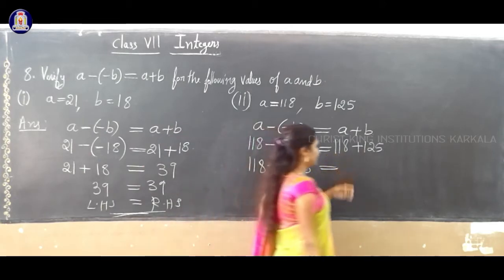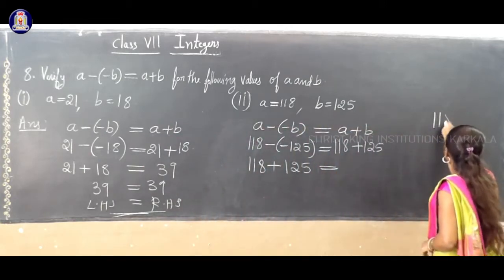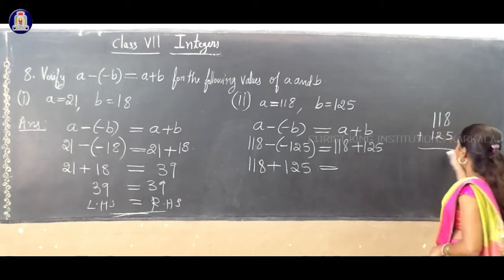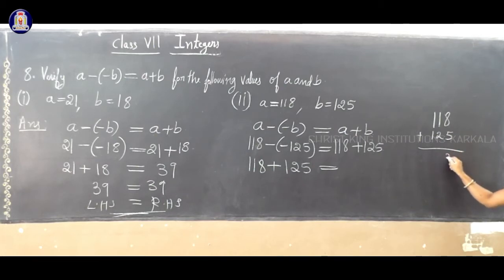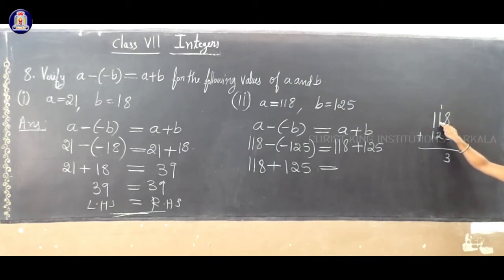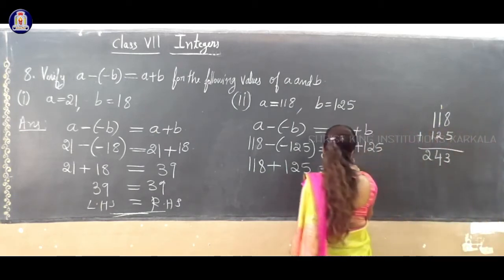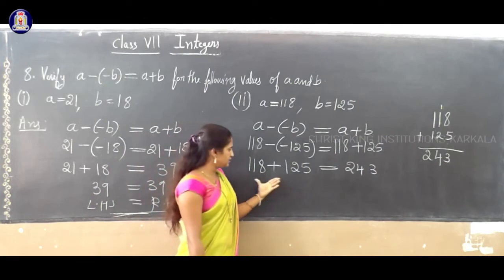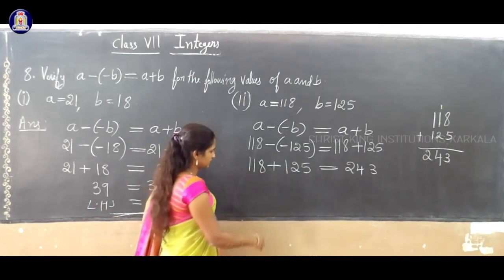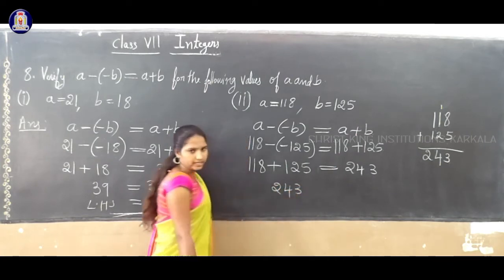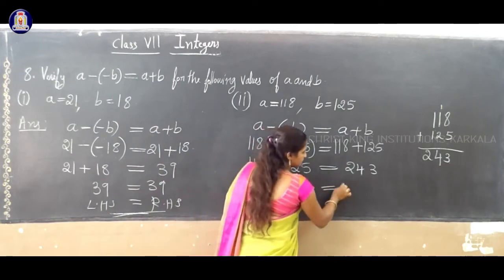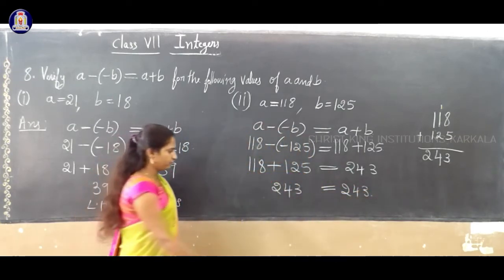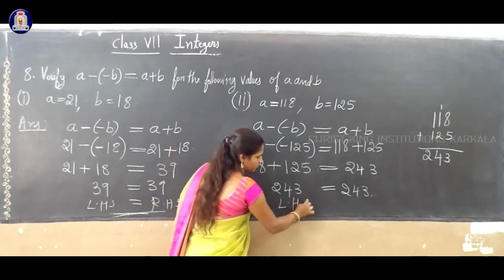Now add 118 plus 125: 8 plus 5 is 13, carry 1; 1 plus 1 plus 1 is 3 — wait, 1 plus 2 plus 1 is 4; so the answer is 243. Similarly the RHS is also 118 plus 125, which equals 243. Therefore LHS equals RHS — verified.